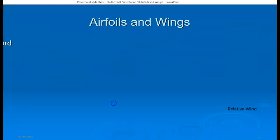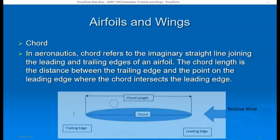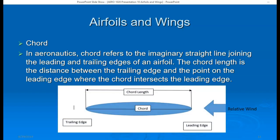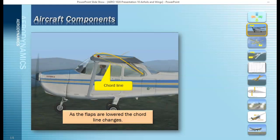The term cord refers to the imaginary line that joins the leading edge of the airfoil to the trailing edge. The cord length is the distance from the trailing edge to the point on the leading edge where the cord intersects. You can see in this illustration the imaginary cord line and the cord length. On an actual aircraft, the cord line runs from the leading edge to the trailing edge with flaps up. If we extend the flaps, we can actually change the cord line because we've changed the location of the trailing edge.